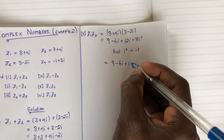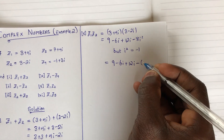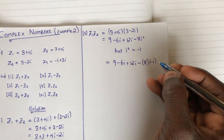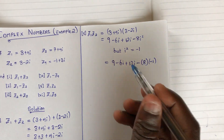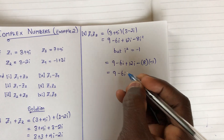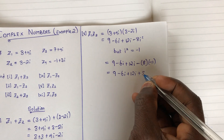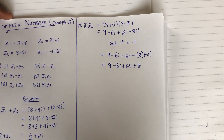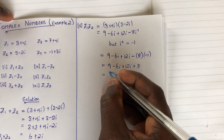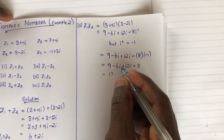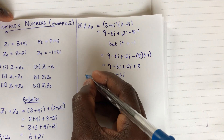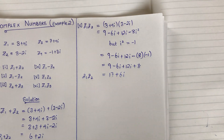Since i squared equals negative 1, we substitute that value. We have 9 minus 6i plus 12i, and minus 8 times negative 1 gives positive 8. Adding all real terms: 9 plus 8 equals 17. Adding imaginary terms: minus 6i plus 12i equals plus 6i. So z1 times z2 equals 17 plus 6i.